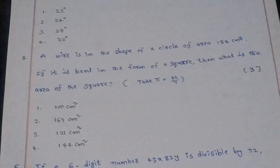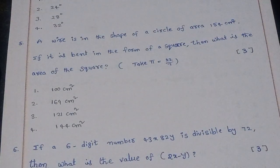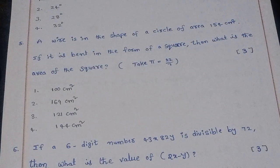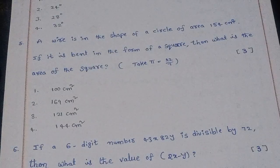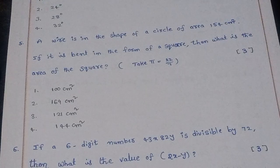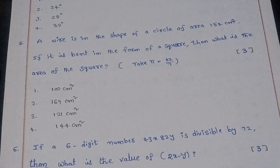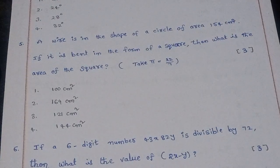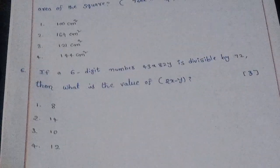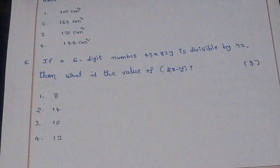Fifth question: A wire is in the shape of a circle of area 154 cm². If it is bent in the form of a square, what is the area of the square? (Take π = 22/7.) The right answer is option 3: 121 centimeter square.